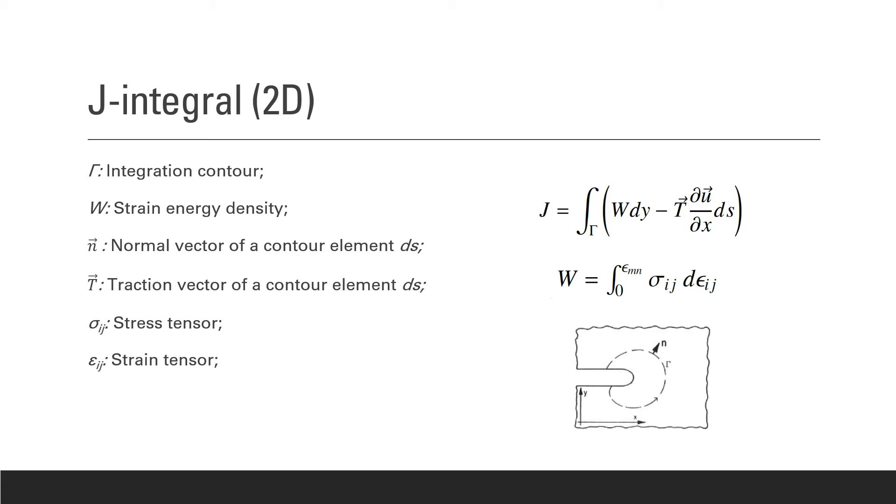The J integral in 2D was introduced by Rice in 1968. It is defined as shown here, and it is the integral around the contour gamma belonging to a solid that contains a crack whose facets are traction-free. As shown in this figure, the contour gamma must start in one of the crack's facets, go around the crack tip counterclockwise and end on the other facet. Rice also showed that the value of the J integral is always the same, even for different paths, meaning that the J integral can be considered path independent.